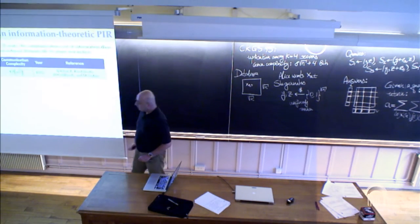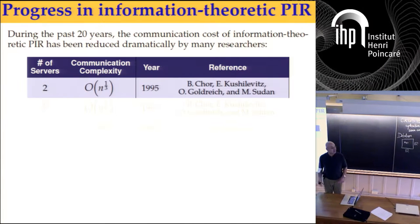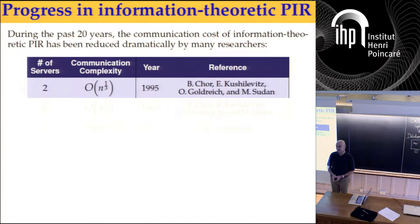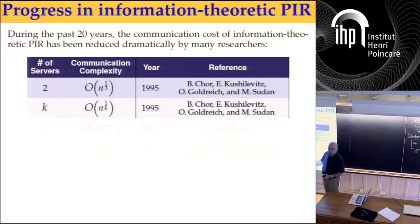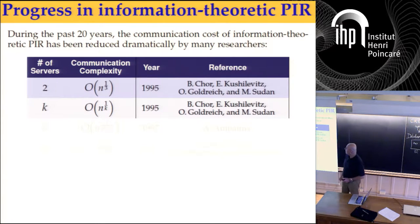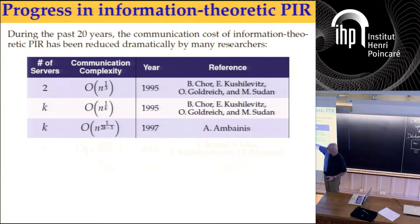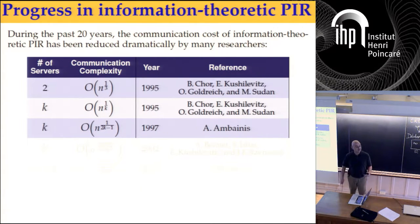Twenty years have passed since this example, and there's been a lot of progress. In the original paper, much better complexity was already shown for k servers in general. Then a couple of years later, the exponent of n was reduced to 1 over 2k by Ambainis. And after that, about every five years there was a major breakthrough.